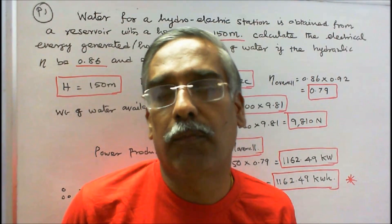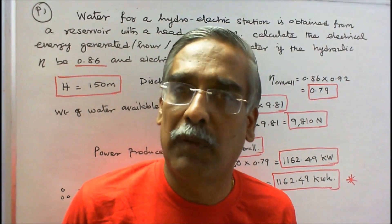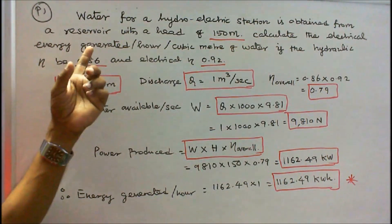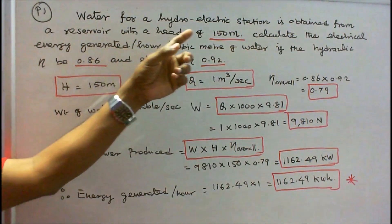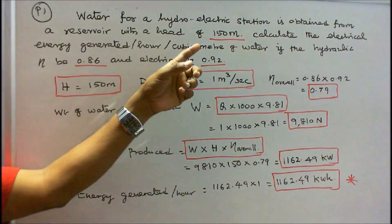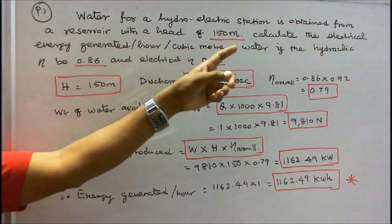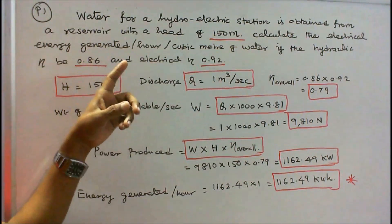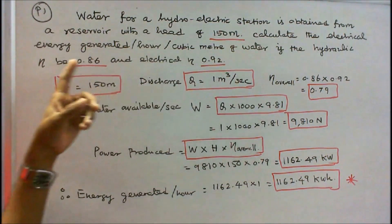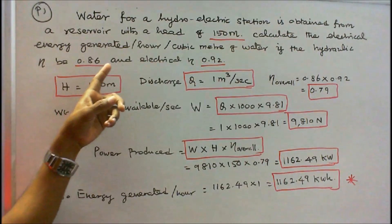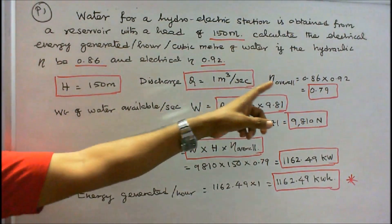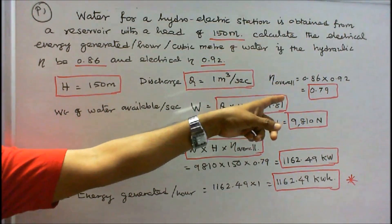In this class, we work out five problems on electric power plants. Problem number one: water for a hydroelectric station is obtained from a reservoir with a head of 150 meters. Calculate the electrical energy generated per hour per cubic meter of water if the hydraulic efficiency is 0.86 and electrical efficiency is 0.92. Therefore, the overall efficiency is equal to 0.86 × 0.92 = 0.79.